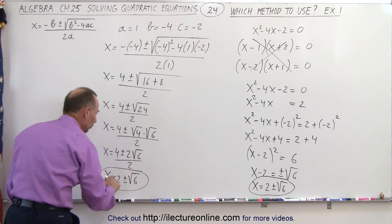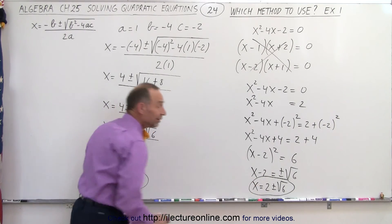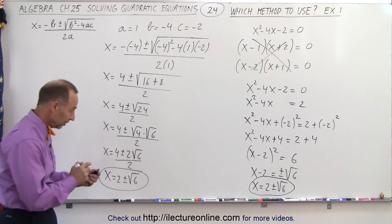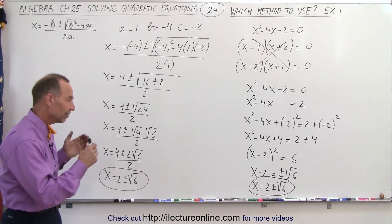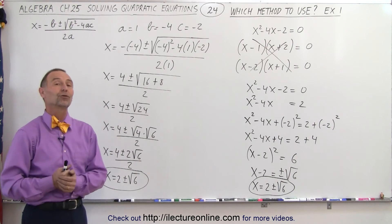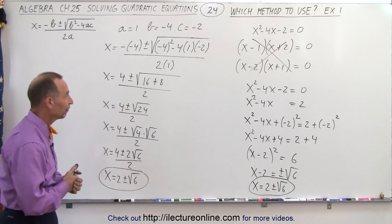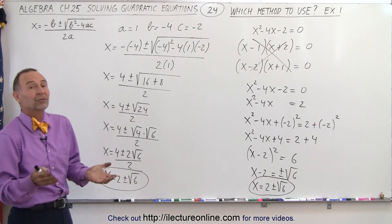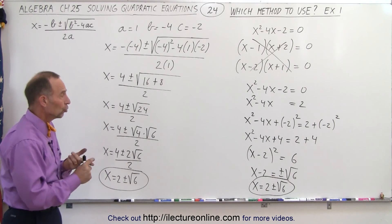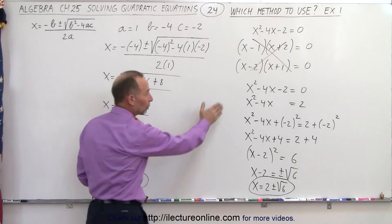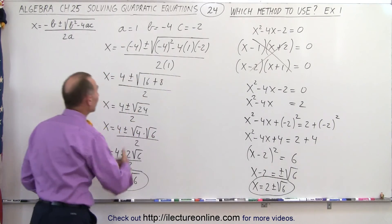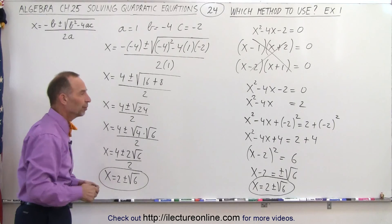And that is therefore the same result as what we got over there. It makes us feel pretty comfortable and pretty positive about the fact that those are probably the two solutions for our quadratic formula. So we had three methods to choose from in this case. We could choose factoring which didn't work because we could not factor it.